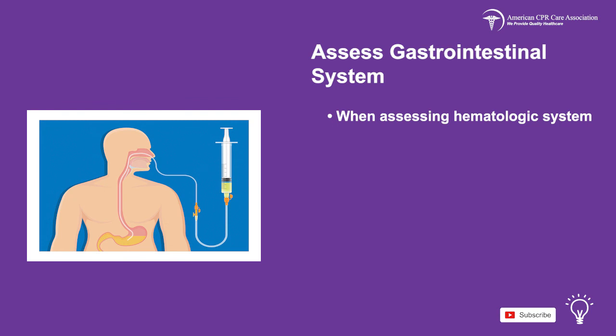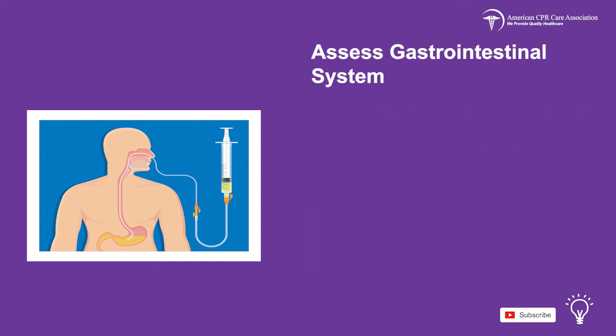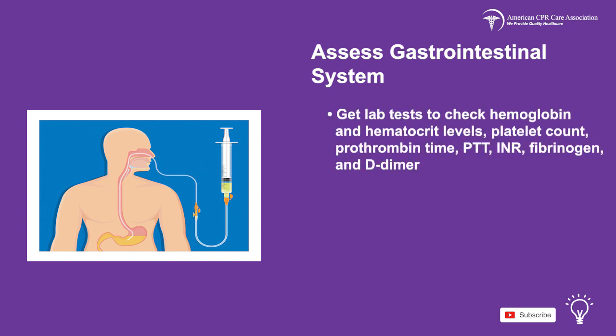When assessing the hematologic system in the child, find the causes of external or internal hemorrhages with a physical examination. Check the skin for pallor, petechiae, or bruising. Get lab tests to check hemoglobin and hematocrit levels, platelet count, prothrombin time, PTT, INR, fibrinogen, and D-dimer.